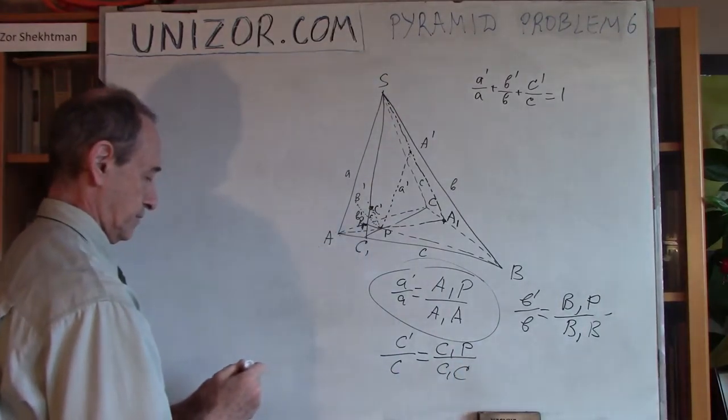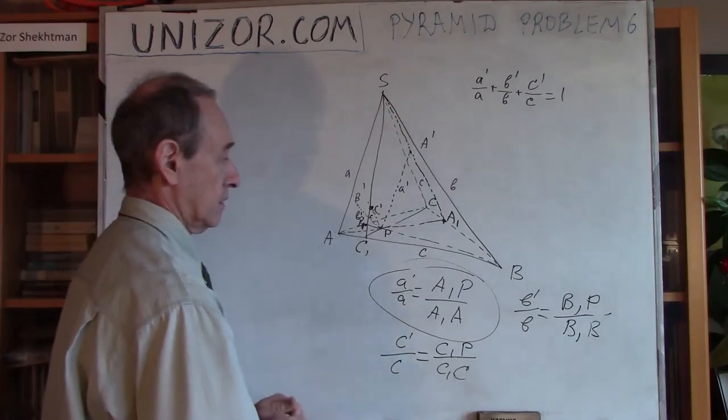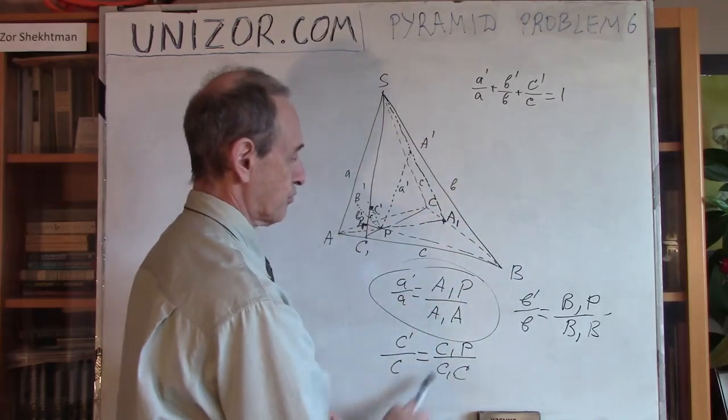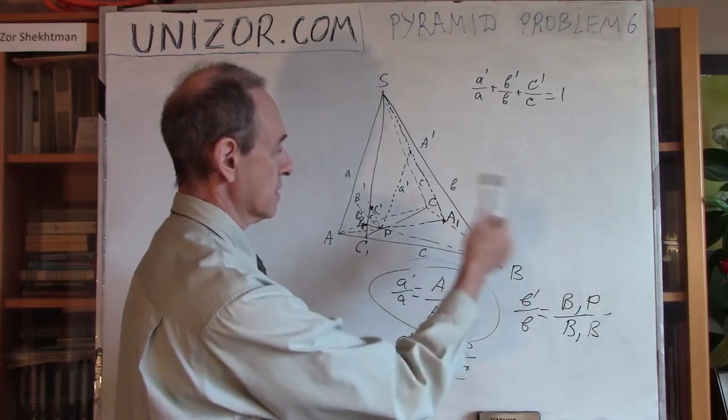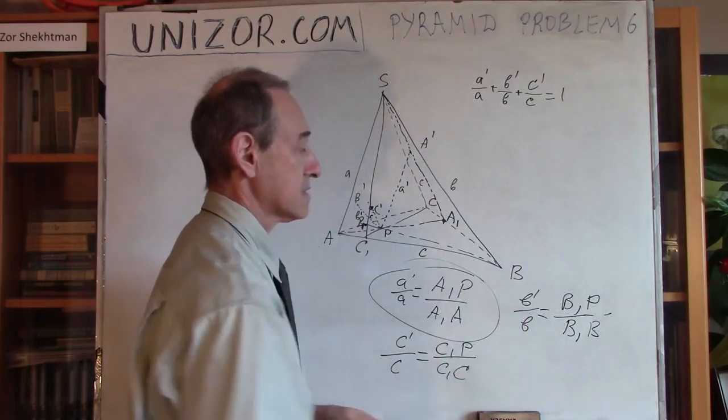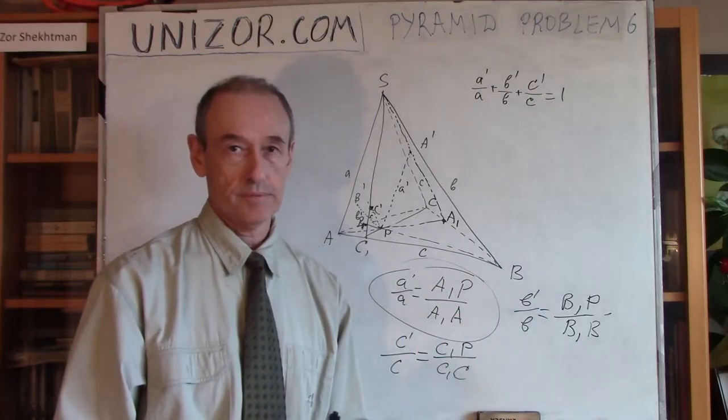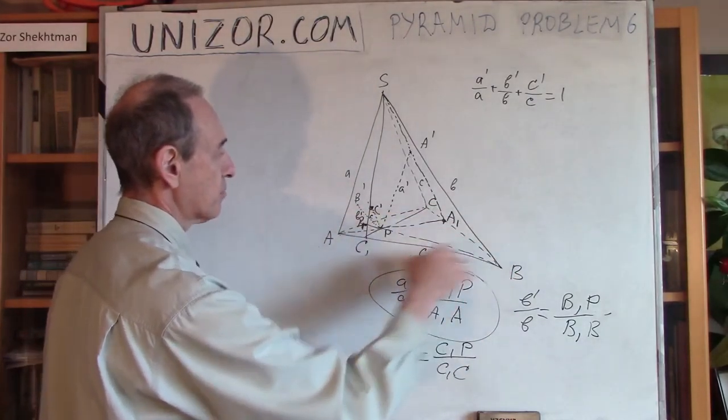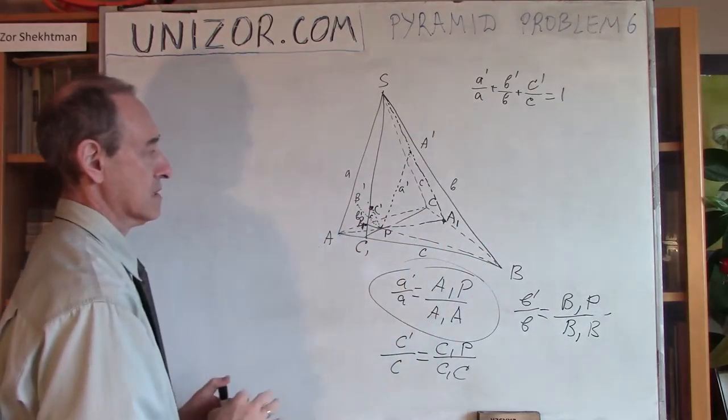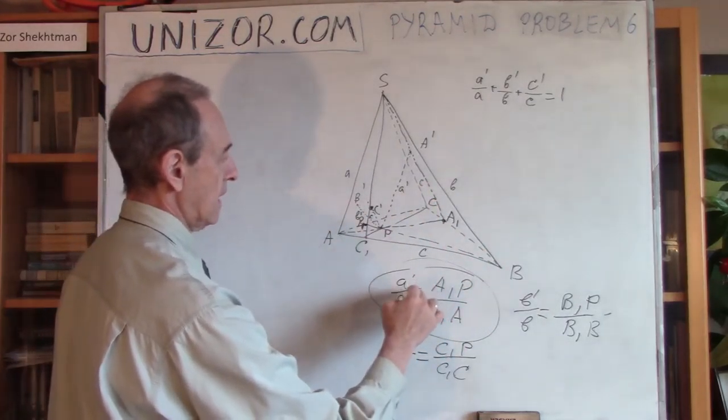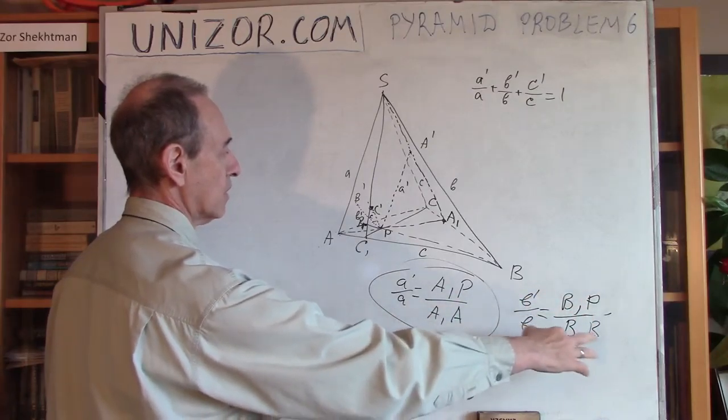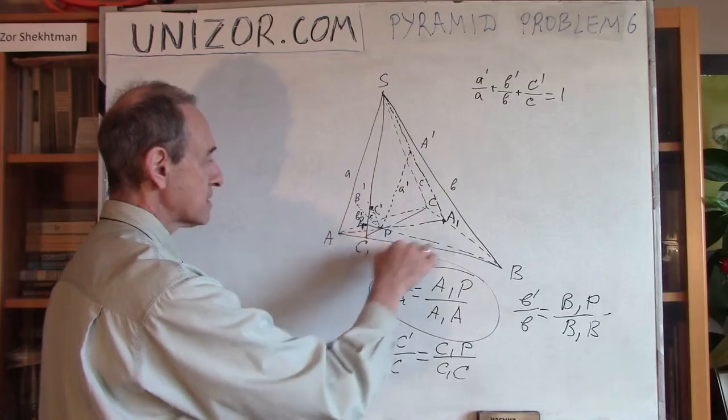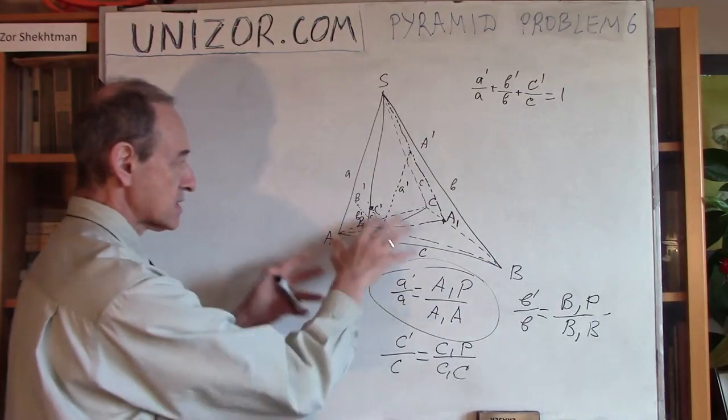Why did I do it? Is it better right now? That instead of this, I have to prove a similar equation with these guys. It's immensely better. Because everything happens right now within the plane ABC, within the base. All these lines, A1P, A1A, B1P, B1B, and C1P, and C1C, they are all pieces of this triangle. Everything is here.